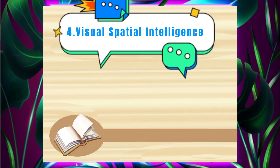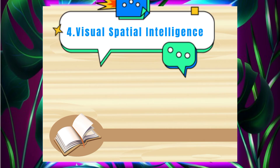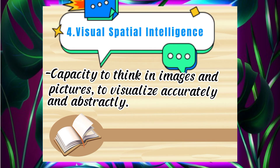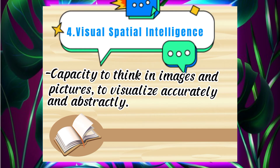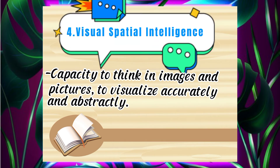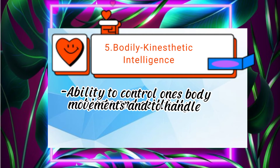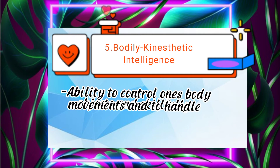Four, Visual Spatial Intelligence: the capacity to think in images and pictures, to visualize accurately and abstractly. Five, Bodily Kinesthetic Intelligence: the ability to control one's body movements and to handle objects skillfully.